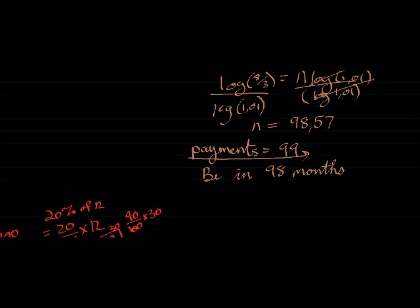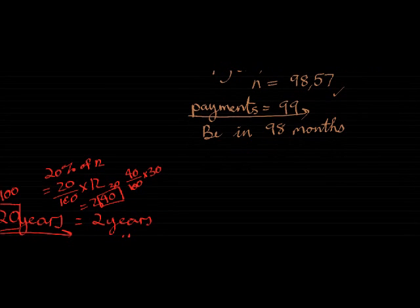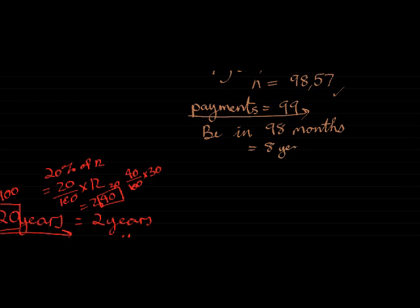So he's already done one of the 99 payments. Then there's 98 months left. So in 98 months, he will have enough in that account after his 98th month. And you can again, 96 months would be 8 years. So that would be 8 years and 2 months if you wanted to.